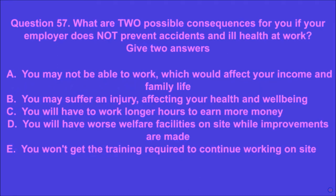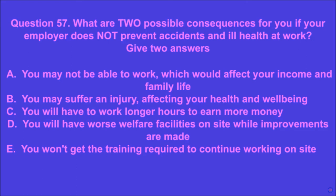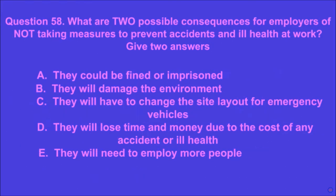Question 57: What are two possible consequences for you if your employer does not prevent accidents and ill health at work? Give two answers. A: you may not be able to work, which would affect your income and family life, B: you may suffer an injury affecting your health and well-being, C: you will have to work longer hours, D: you will have worse welfare facilities, E: you won't get the training required. A and B are the correct answers.